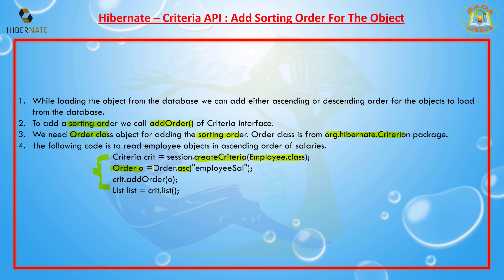I am sorting my employees based on employee salary. I call crit.addOrder(), passing the Order object to my criteria. Finally, calling the list() method gives you an ascending order list of objects from the database.